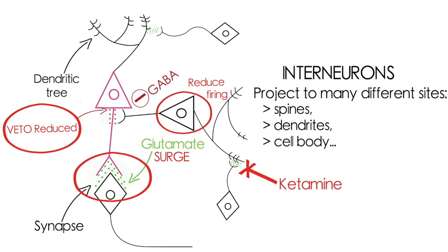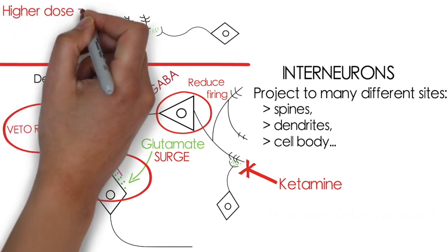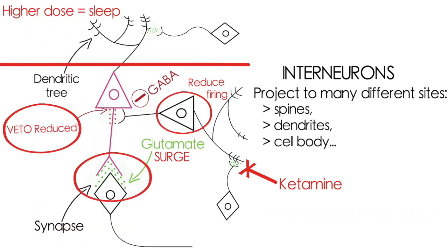So, this is just a theory and these aren't the only glutamate receptors and a lot could depend on the dose. So perhaps a higher dose will shut off these other inputs too and send you to sleep, which is why ketamine is an anesthetic.